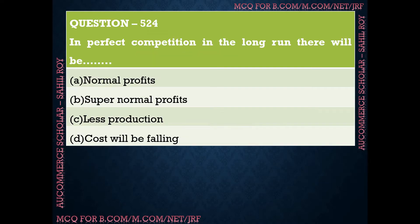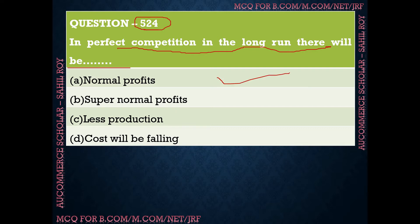Question number 524: In perfect competition in the long run, there will be — options are: normal profits, super normal profits, less production, or cost will be falling. The correct answer is: in perfect competition in the long run, there will be normal profits — option A is the correct answer. In perfect competition, in the long run, firms earn normal profits.